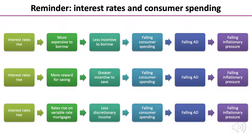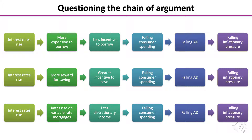If interest rates rise, those rates will also rise with variable rate mortgages, so consumers with a variable rate mortgage have less discretionary income. That will result in falling consumer spending, falling aggregate demand, and falling inflationary pressures. In an ideal world this is what should happen if monetary policy works — interest rates rising leading to a fall in aggregate demand and a fall in inflationary pressure. But is this always the case? A key part of evaluating monetary policy involves questioning our initial chain of argument — we're going to question each of these three logic chains.